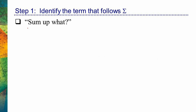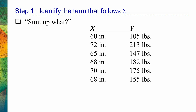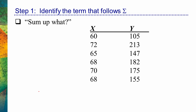What we're essentially asking ourselves is a question like this: 'Sum up what? What am I being asked to sum up?' So let's look at our data again for those two variables, x and y — height and weight. I'm going to remove the descriptors, inches and pounds, just so we're dealing with numbers. So let's say we see a small equation like 'sigma x' — sum up x. I need to ask myself: sum up what? What's attached to the sigma sign? In this case, it's pretty easy to see only the x's. So what we're being asked to do is sum up all the data for the x variable.